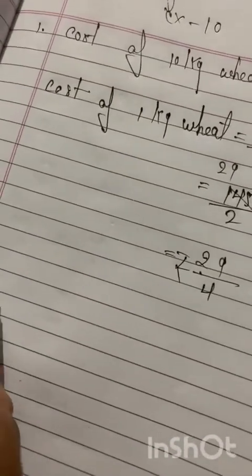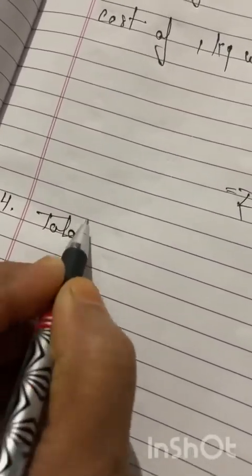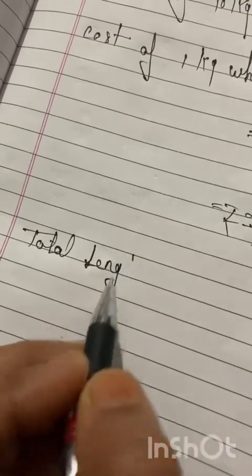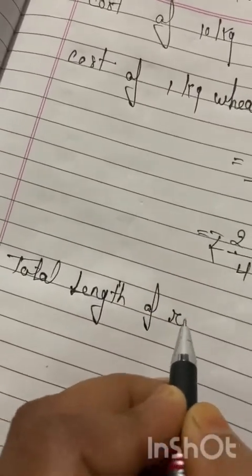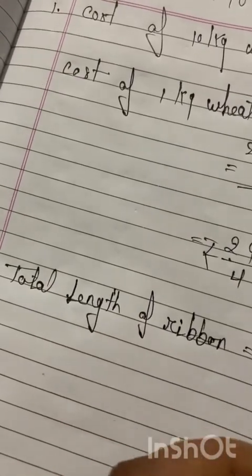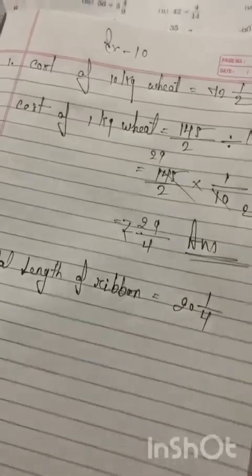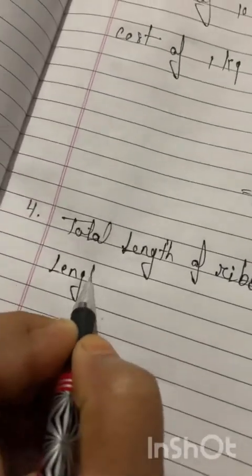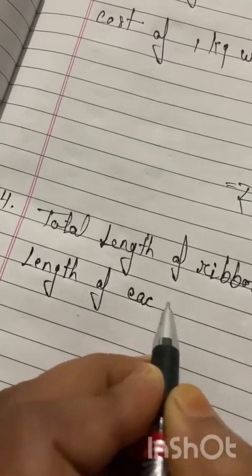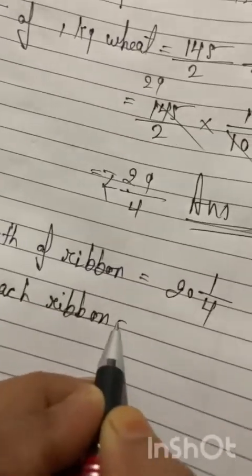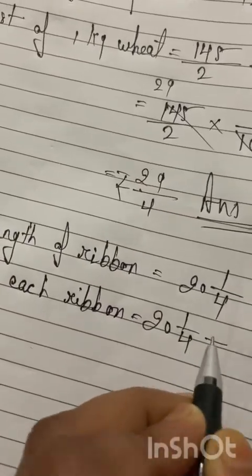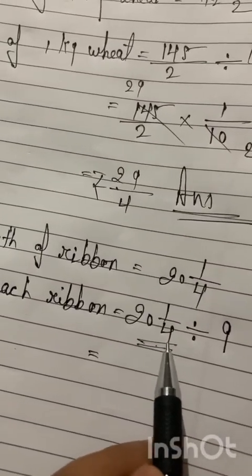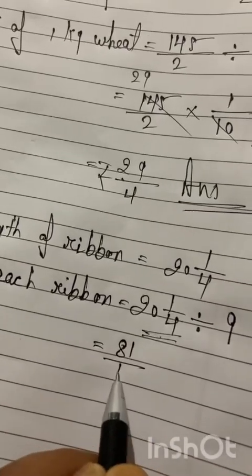Length of the ribbon is equal to 20 whole 1/4. Length of each piece equals 20 whole 1/4 divided by 9. We will convert this mixed fraction into an improper fraction: 20 times 4 is 80, plus 1 is 81, so 81/4 divided by 9.